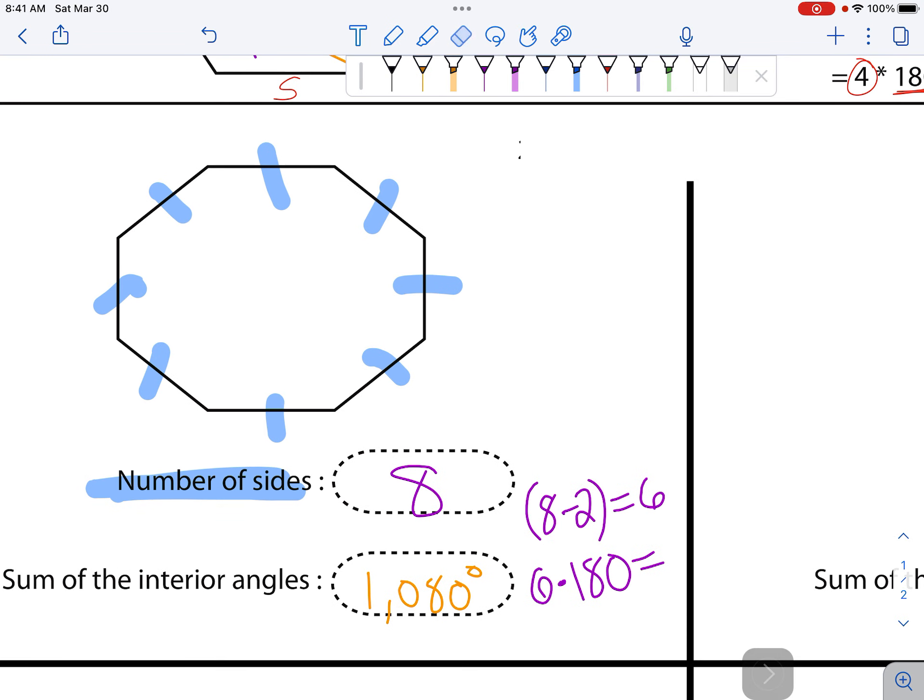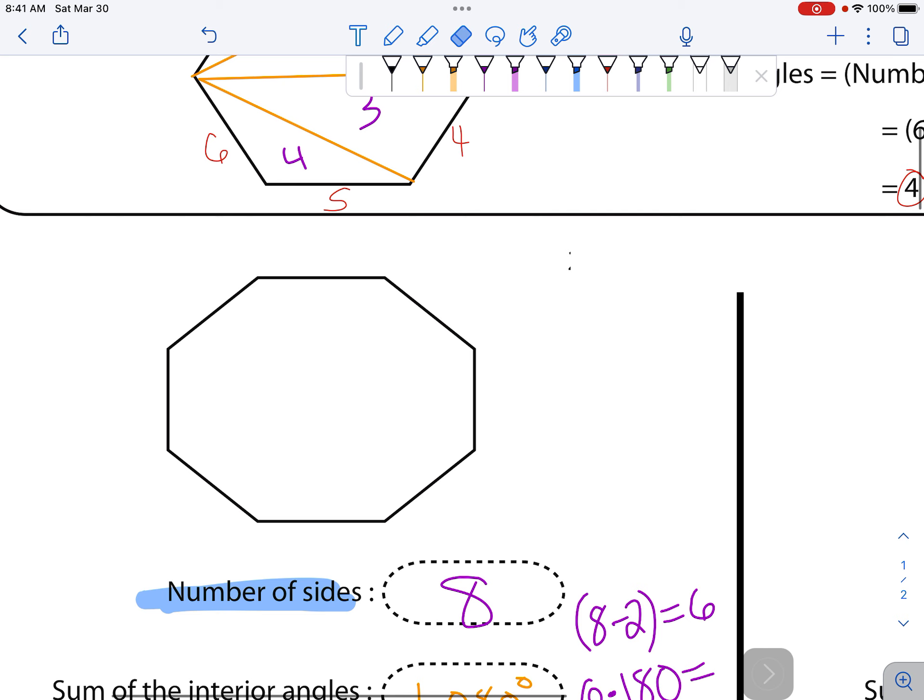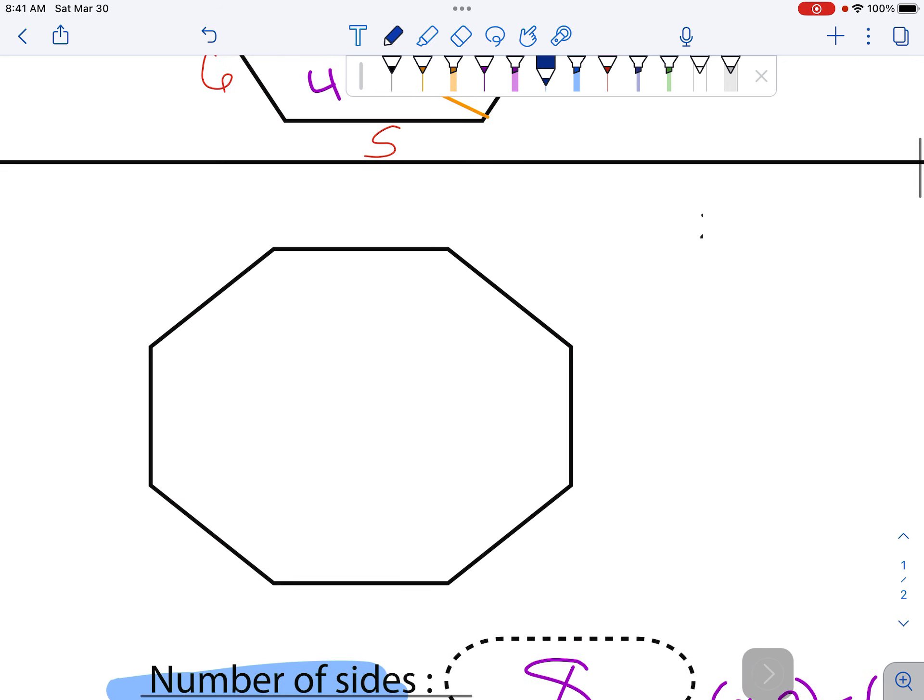So we should be able to find 6 triangles hiding in here. Again, you have to pick 1 corner, 1 vertex. You can't start moving them all around. 1, 2, 3, 4, 5 lines. 1, 2, 3, 4, 5, 6 triangles. There they are. It's kind of a cool thing that works.